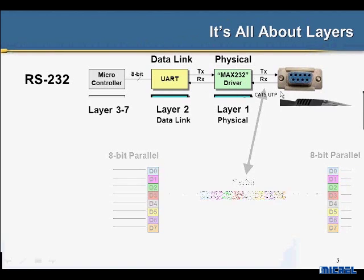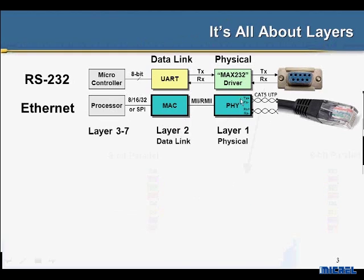The same thing happens with Ethernet but we don't call them the same type of devices. The layer 1 device in this case is an Ethernet PHY — PHY stands for physical layer. The layer 2 device, or the data link layer, that converts all the data back into a digital 16-bit word or whatever the processor wants to read is called the MAC, which is a media access controller.